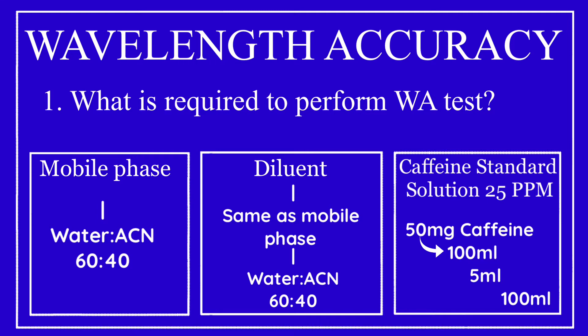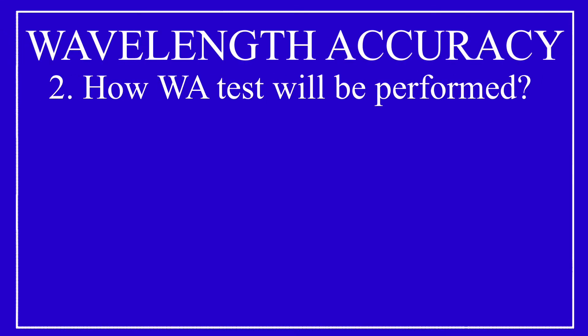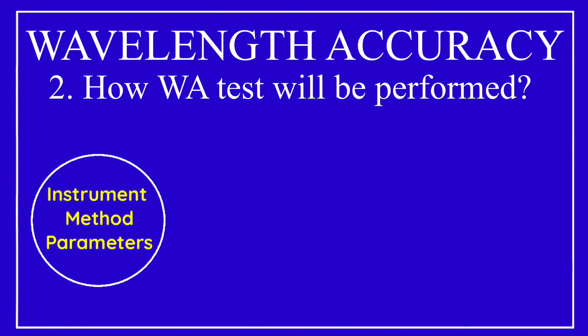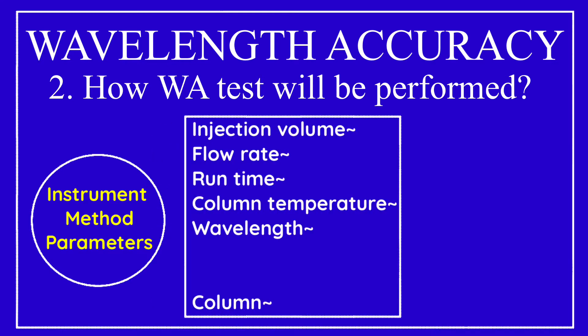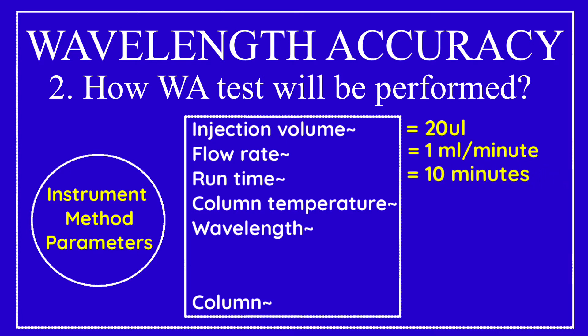To perform the wavelength accuracy test, we apply certain instrument method parameters to the HPLC system. Injection volume is 20 µL, flow rate is set at 1 ml per minute, run time is kept at 10 minutes, and column temperature is kept at 40 degrees Celsius.